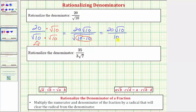So now the denominator is rationalized, but notice how we can simplify further because the numerator and denominator share a common factor of 10. There is one 10 in 10 and two 10s in 20, and because the denominator is now one, this simplifies nicely to two square root of 10.